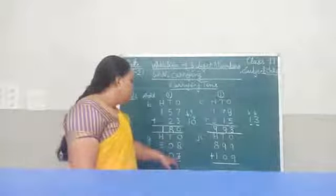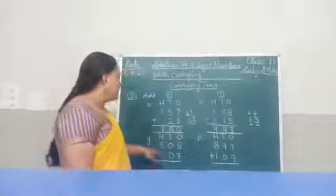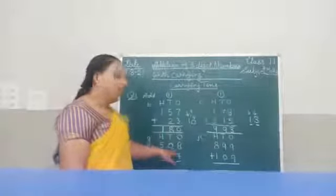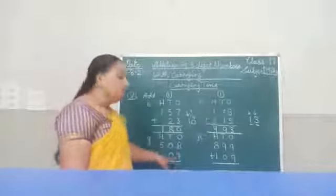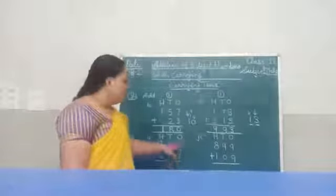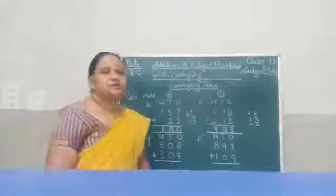Now, 8 plus 7. The numbers are 508 plus 307. On the ones place, 8 plus 7.